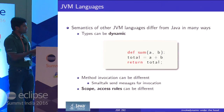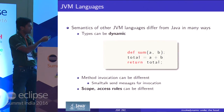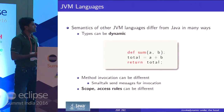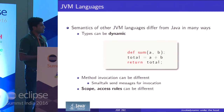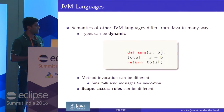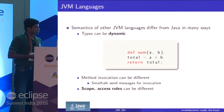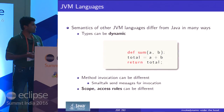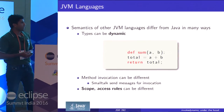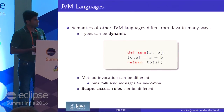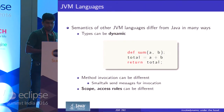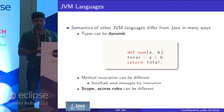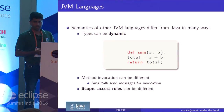What I mean by dynamic typing is: here is a Python function which takes two arguments. Contrary to Java, we are not defining any type here. The variable will be assigned a type at runtime. If you are passing integers, then a and b will be assigned the type int at runtime.